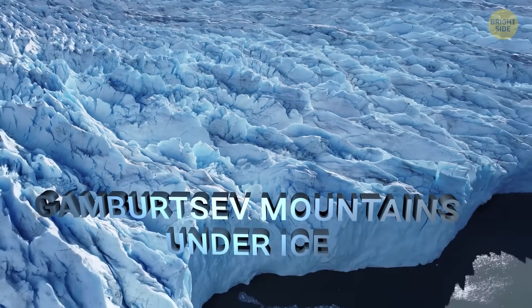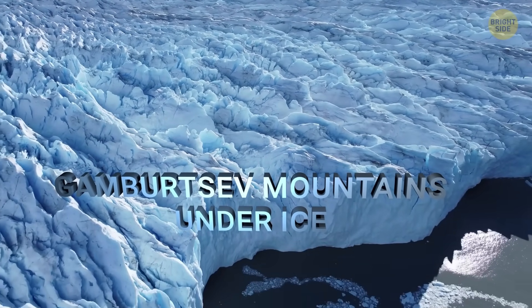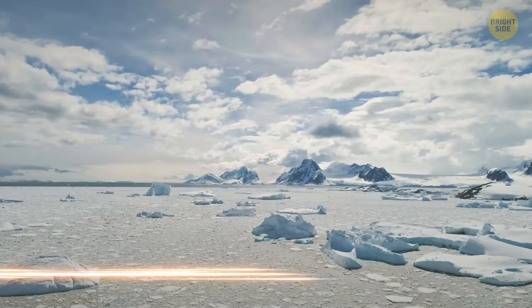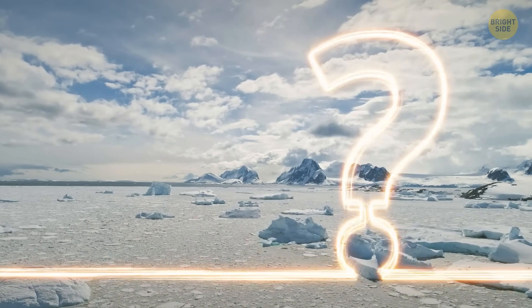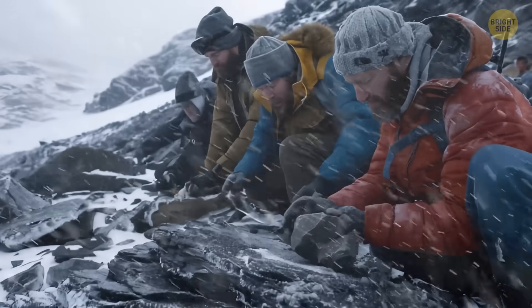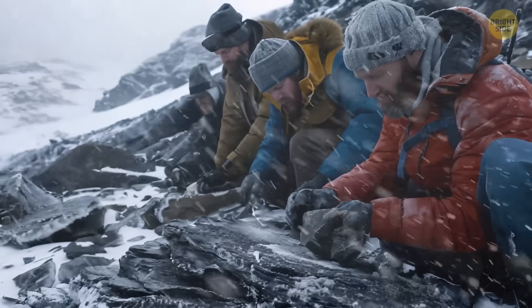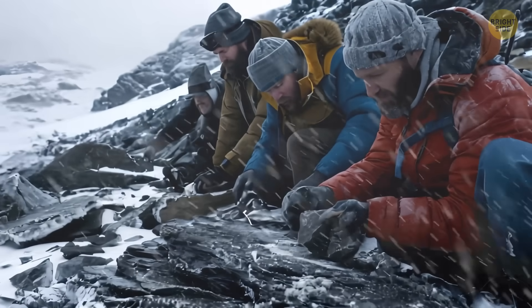If the Gamburtsev Mountains under ice is one of the most unexplored places in the world, then how could people find out its origin? The answer is simple. Tiny particles of rock have told us about the changing landscape of the planet.